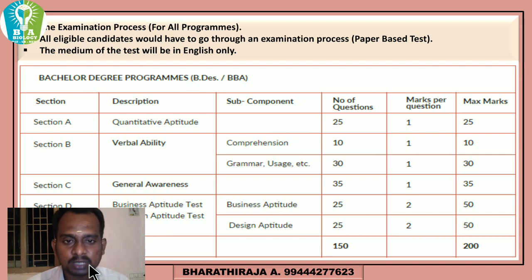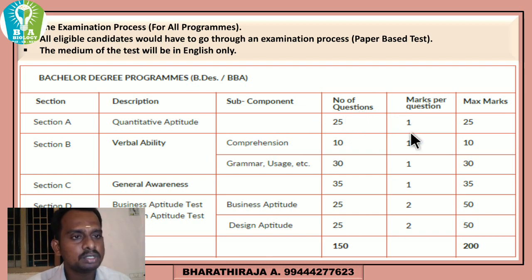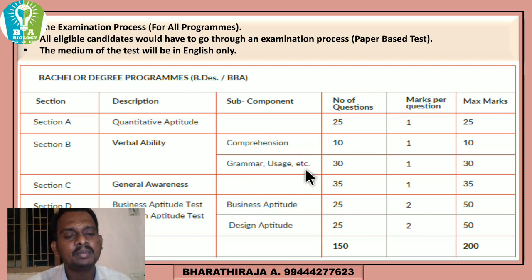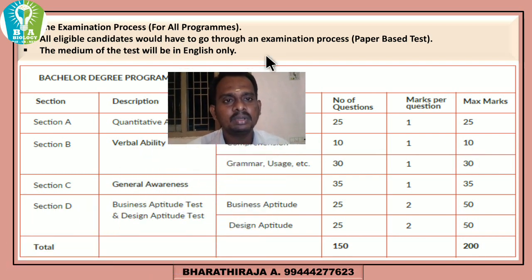To pass the entrance exam: Section A is Quantitative Aptitude with 25 questions and no negative marking. Section B is Verbal Ability, which includes comprehension worth 10 marks and grammar and usage worth 30 marks — total 40 marks for the verbal ability category.